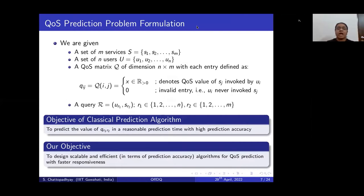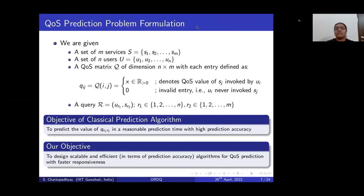This is the formal definition of the problem. We have m services and n users, and a QoS matrix where if a user invoked a service in the past, the QoS value is recorded as a real number greater than zero. If the user never invoked a service, the corresponding entry is represented by zero, indicating an invalid entry. A query consisting of a target user and target service pair comes to the system, and the objective is to predict the QoS value for that pair with high accuracy, high scalability, and faster responsiveness.